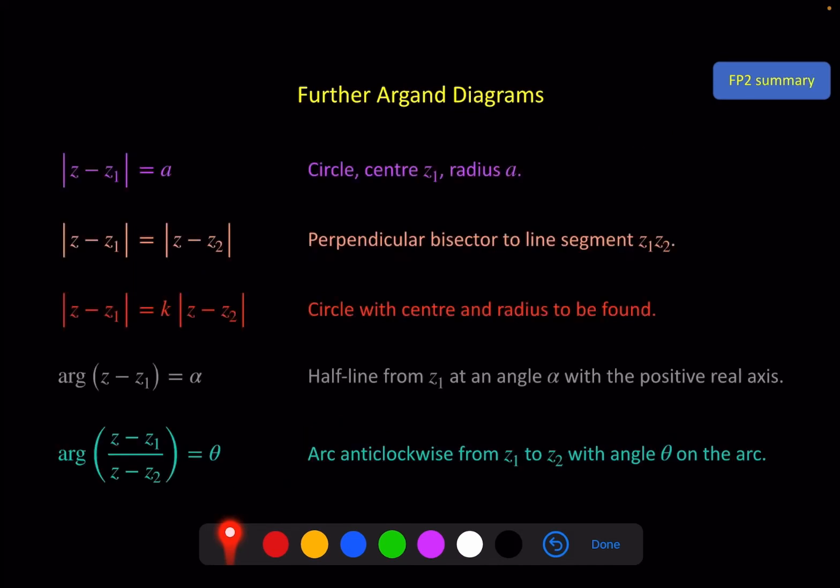So our final summary of all five results is here. You need to be able to recognize the different formats. And you need to remember what those different formats represent in terms of a locus on an Argand diagram. You need to be able to sketch the locus. And you might have to find the Cartesian equation, in which case you follow that same process we've done each time.